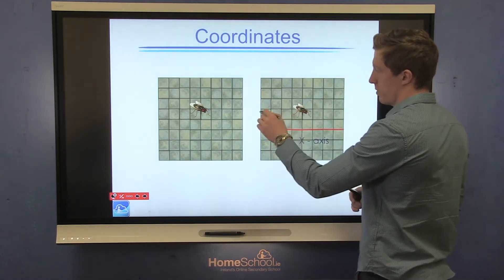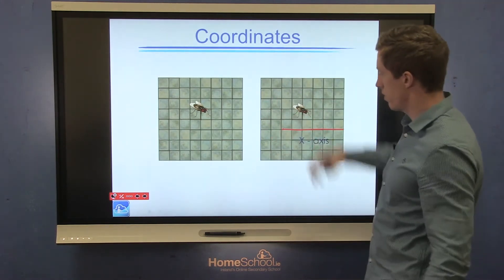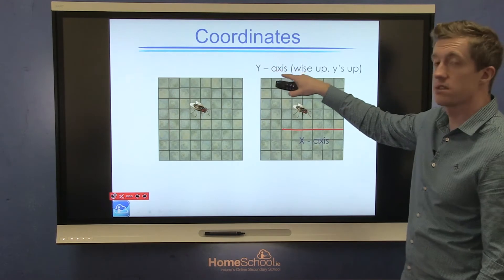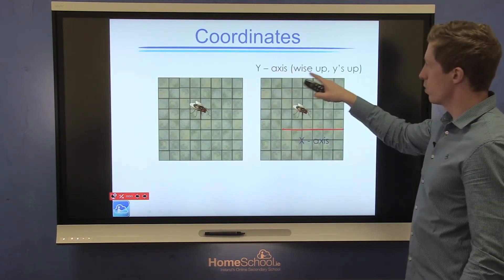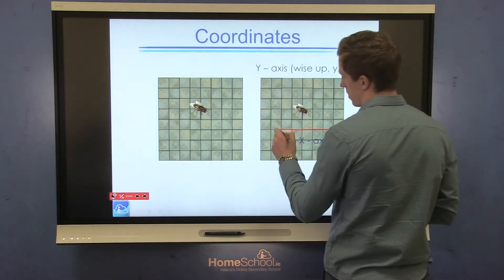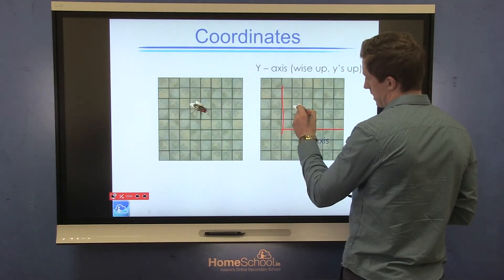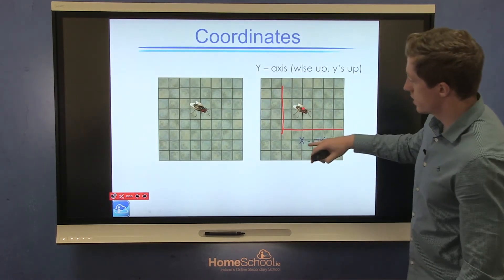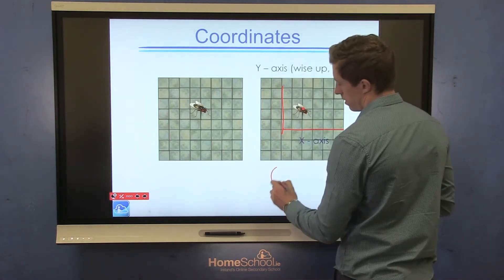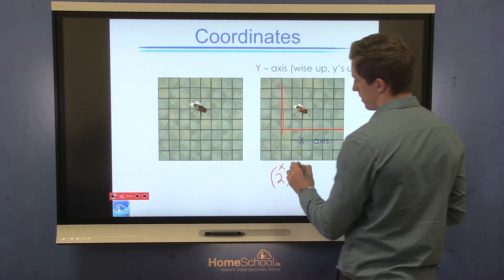But anywhere along this line could be two boxes away, so we need another line to tell me how far left and right it is. We know how high it is — now I need to know how far left and right it is. So I bring in something else that we call the y-axis. An easy way to remember that is the phrase 'y is up.' The y-axis is simply a straight line going up that we measure away from. So this fly's position is this exact point here — it's two up and two across. Our coordinates are called 2, 2. This is our x and this is our y.